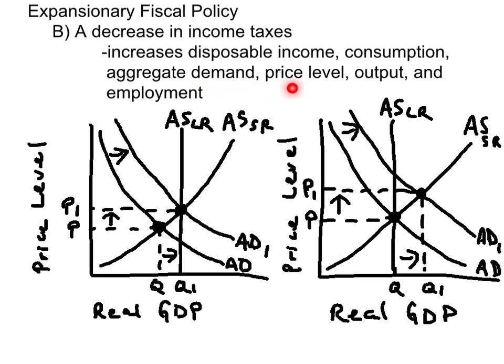This will increase the price level, output, and employment. Another option is that the government could reduce business taxes, which would then increase gross investment, which would also shift aggregate demand to the right.